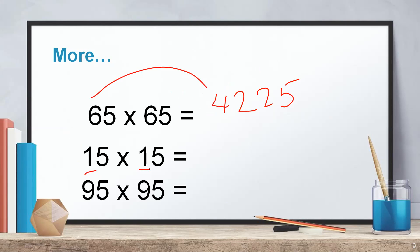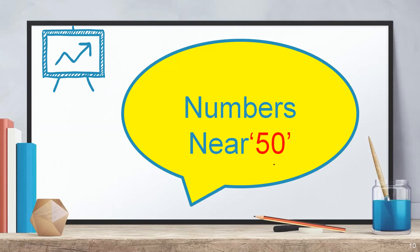15 into 15. 1 is the first digit and its succeeding number is 2. 1 into 2 is 2, write 25 at the end. 95 times 95. 9, its succeeding number is 10. 9 times 10 is 90, then write 25 at the end. Hope you all mastered this technique and you will be solving these kinds of questions within seconds.